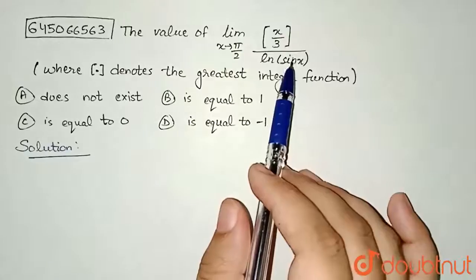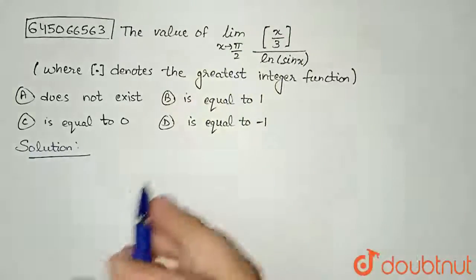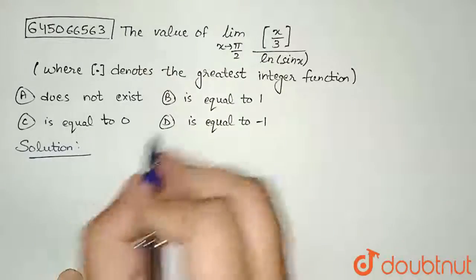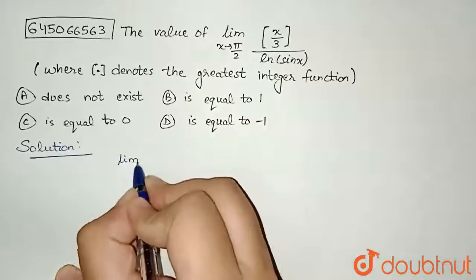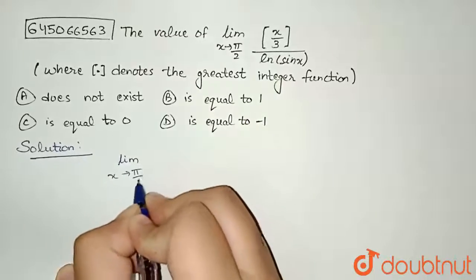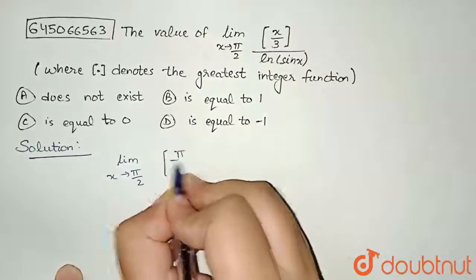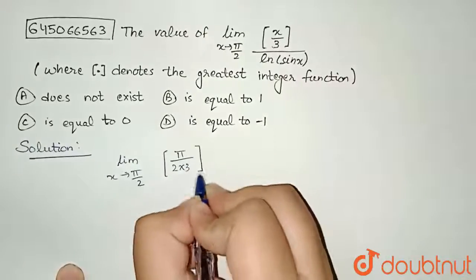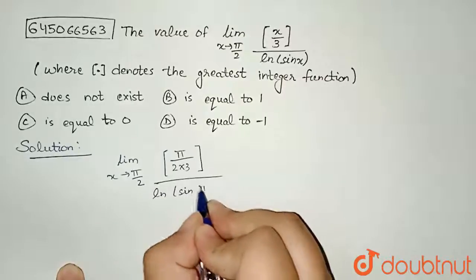I need to evaluate this limit. So first of all, let's put x as π/2. If I put x as π/2, I will get limit x tends to π/2. If I put π/2 here, it will be π/2 divided by 3, and this will be ln of sin(π/2).